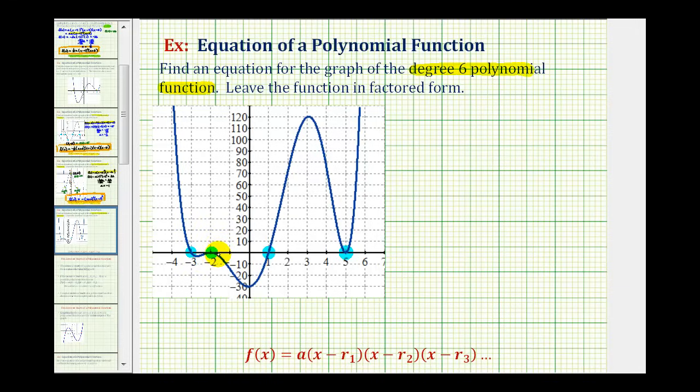Notice the zeros at negative two and positive five do just touch the x-axis but don't cross the x-axis, which means the zeros of negative two and positive five have an even multiplicity. Because we have four x-intercepts, we can assume both have a multiplicity of two.